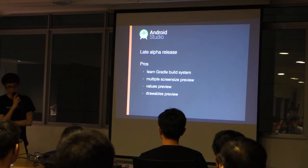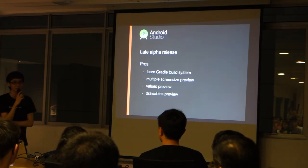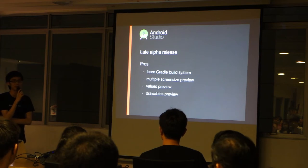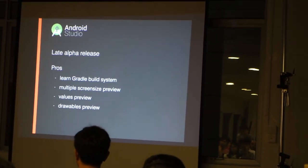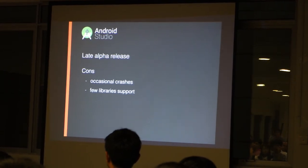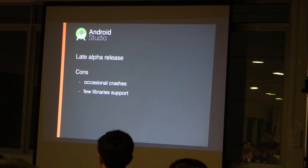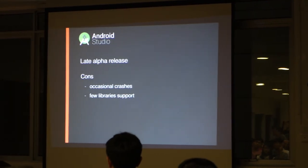In the alpha release of Android Studio, not a lot of things worked well yet — the UI stuff didn't really work. So you really had to learn the Gradle build system and how Gradle works. But there are pros: you have multiple screen size previews in the layout editor, values previews like strings and dimensions in the code, and drawable previews. The cons are occasional crashes, though they're quite rare. Android Studio has auto-save, so it didn't result badly. Also there were few libraries supported at first, but most have since moved to Maven Central and JCenter, so now it's really good.